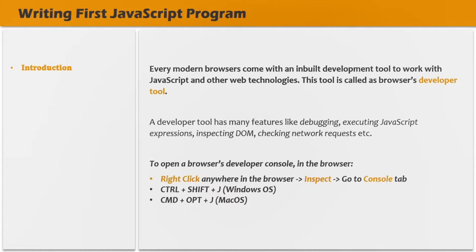All modern browsers come with an inbuilt development tool to work with JavaScript and other web technologies. This tool is called the developer tool. A developer tool has many features like debugging, executing JavaScript expressions, inspecting DOM elements, checking networks — all these things you can do using the browser's developer tool. The most important tool which we are interested in as a JavaScript developer is the developer console tool. So let's talk about these developer tools and understand what we can use them for.